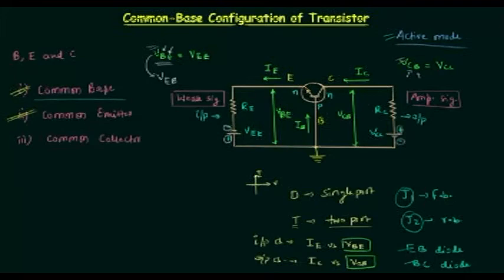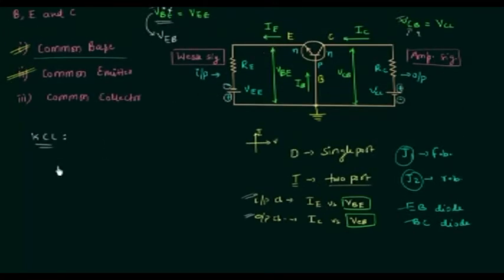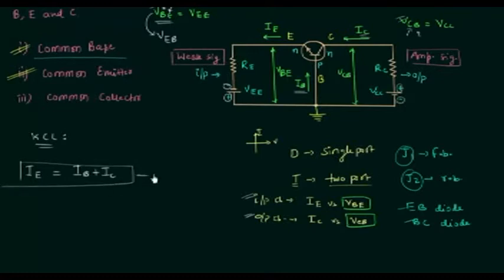I am not going to explain the input and output characteristics in this lecture; we will continue with them in the next lecture. In this lecture I will use KCL to obtain the relation between the emitter current, the base current, and the collector current. From Kirchhoff's current law, the sum of entering currents equals the sum of leaving currents. In this circuit IE is the only leaving current, so IE equals IB plus IC. This is an important equation and it is true for active mode of operation only.